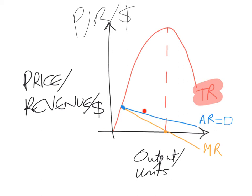Before the maximum total revenue point, marginal revenue is positive. After that point, marginal revenue is negative.